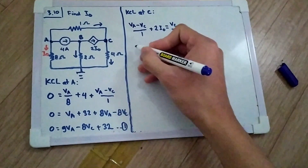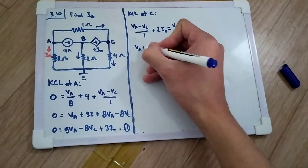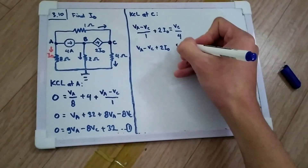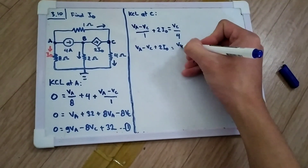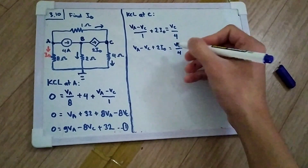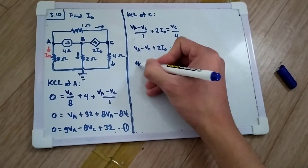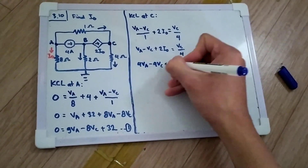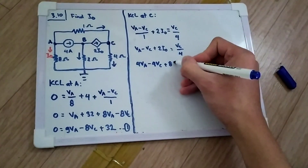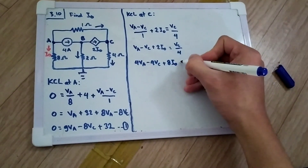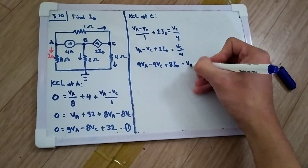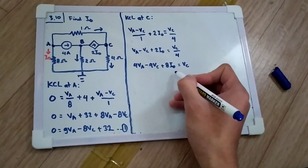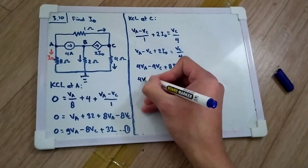Simplifying, we have VA minus VC plus 2·I0 equals VC divided by four. Multiplying both sides by four gives 4·VA minus 4·VC plus 8·I0 equals VC. We still have I0 in the equation, so we need to substitute for it.